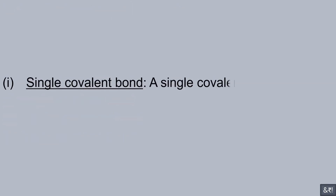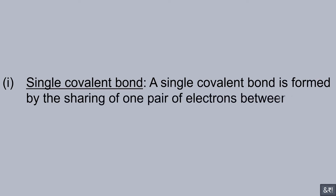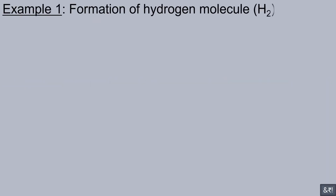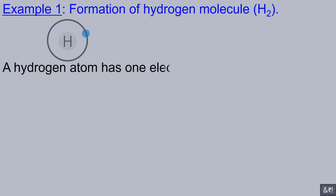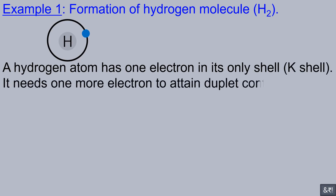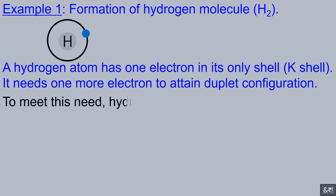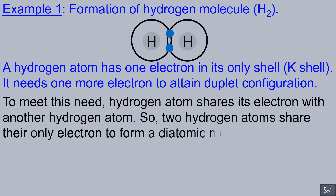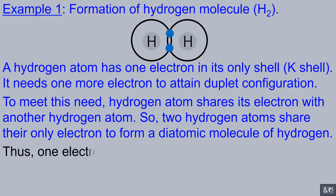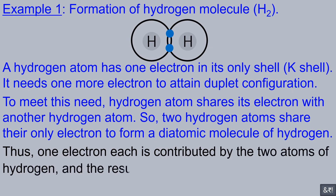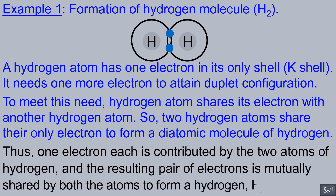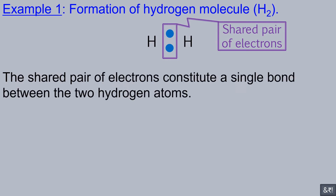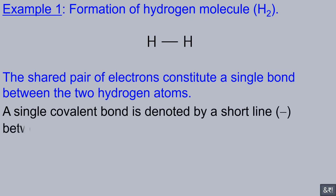A single covalent bond is formed by the sharing of one pair of electrons between the atoms, each atom contributing one electron. Example 1: Formation of hydrogen molecule H2. A hydrogen atom has one electron in its only shell. It needs one more electron to attain duplet configuration. Two hydrogen atoms share their only electron with each other to form a diatomic molecule of hydrogen. The resulting pair of electrons is mutually shared by both atoms. The shared pair of electrons constitutes a single bond between the two hydrogen atoms, denoted by a short line between the two atoms.